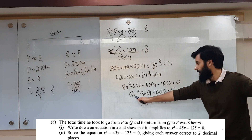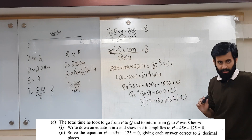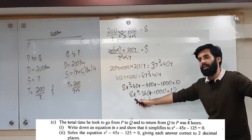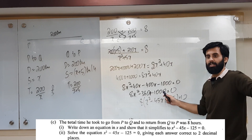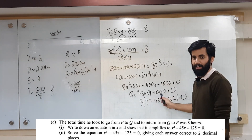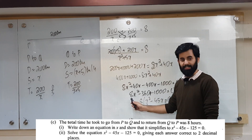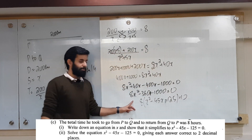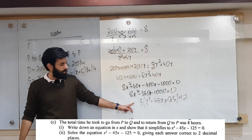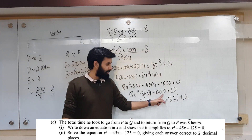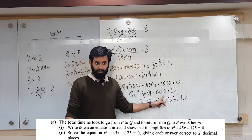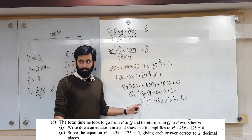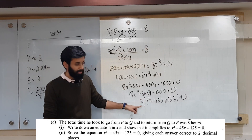From the beginning: you have 8x squared minus 360x minus 1000. In these three terms we can remove a common factor, which is 8, because 8x squared, 360, and 1000 are all multiples of 8. This is Paper 2, so we can use a calculator — trial and error with the calculator will get you there.